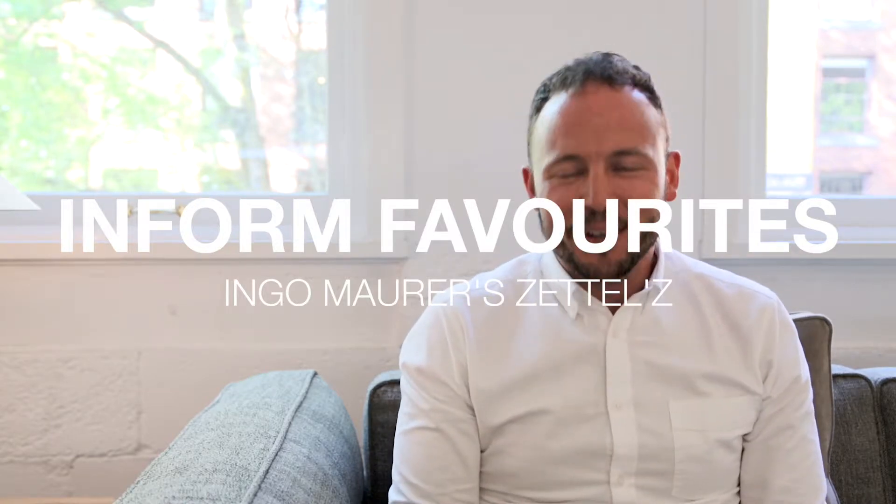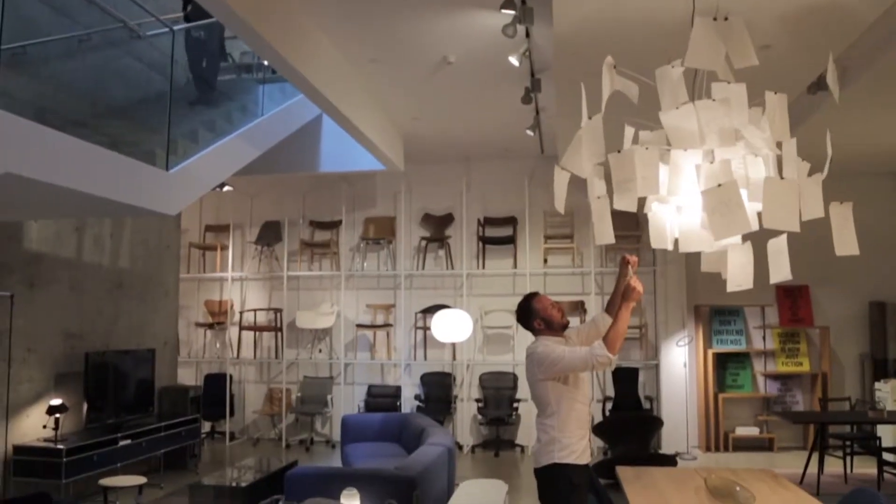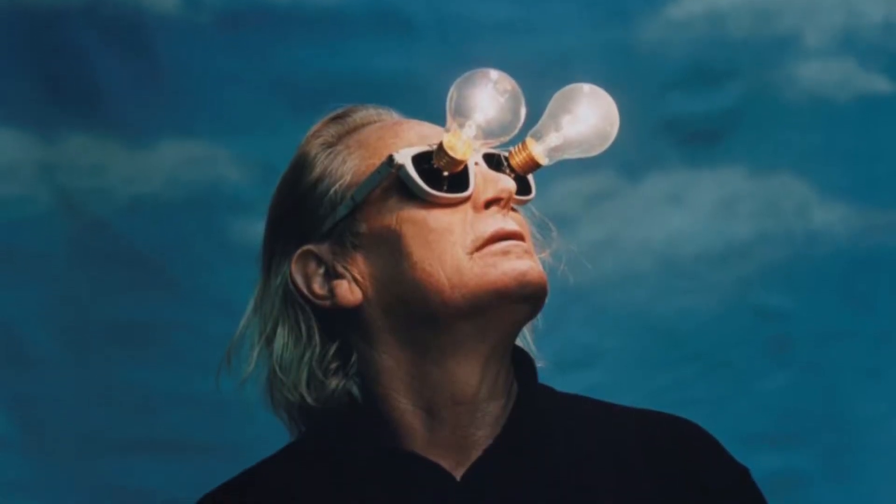Ingo Maurer, to me, is the maestro of light. He was actually a graphic designer that turned into an industrial designer and then specialized in lighting.